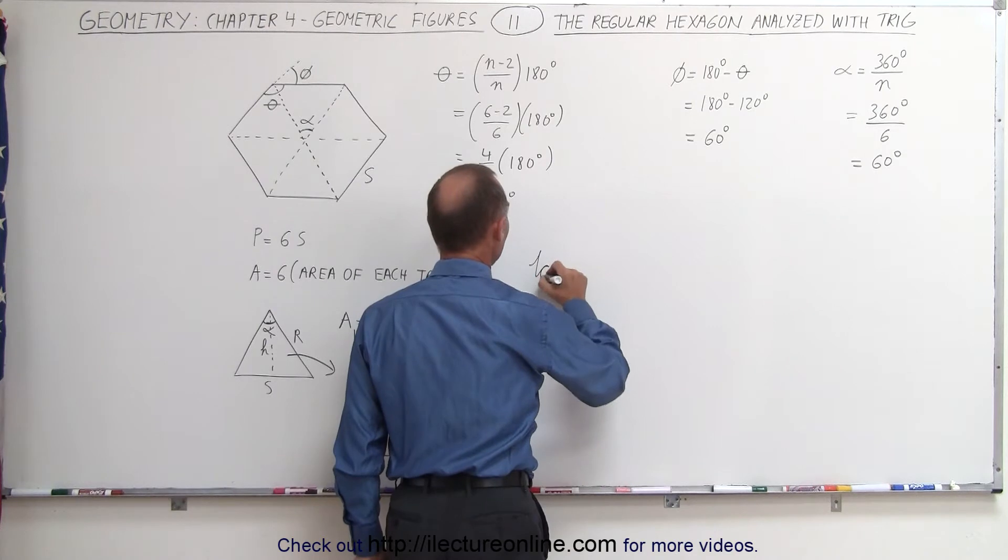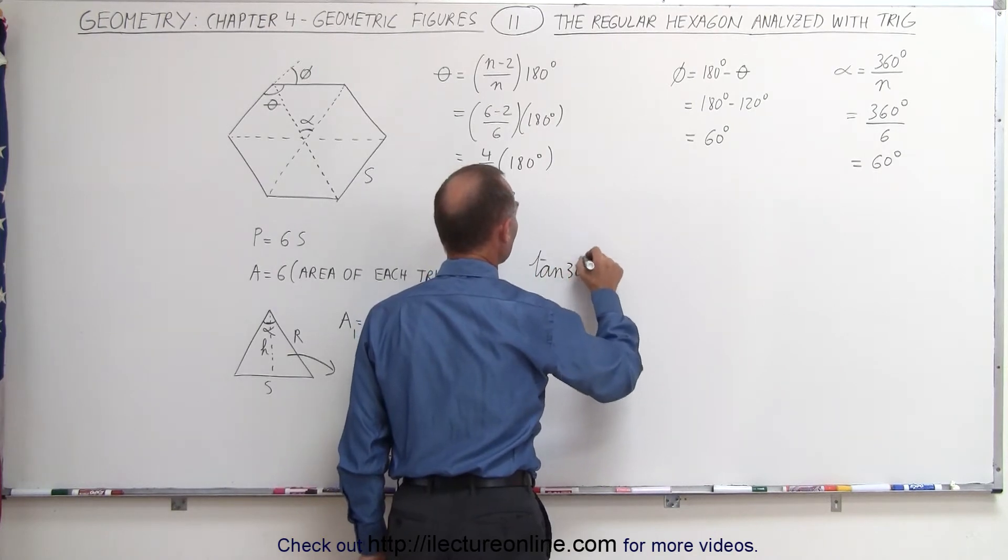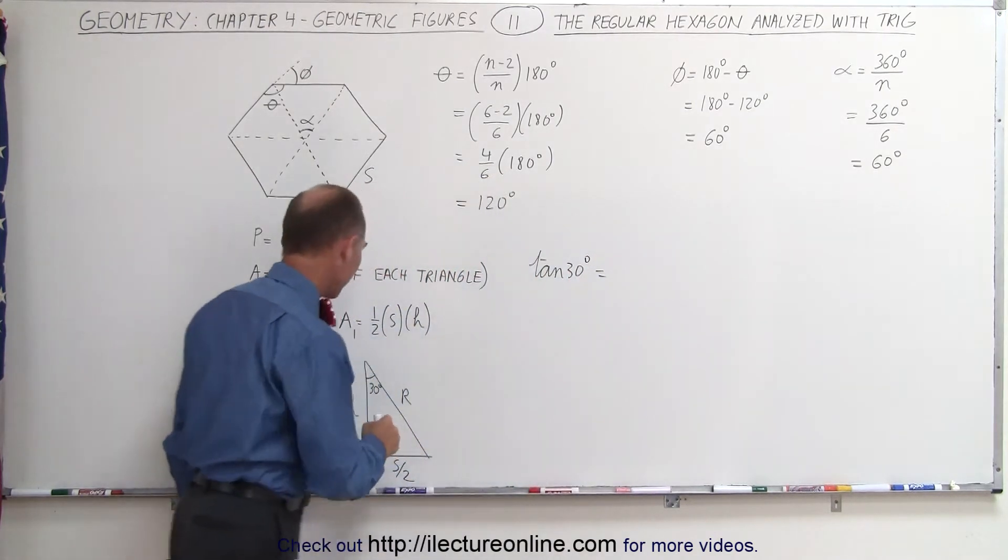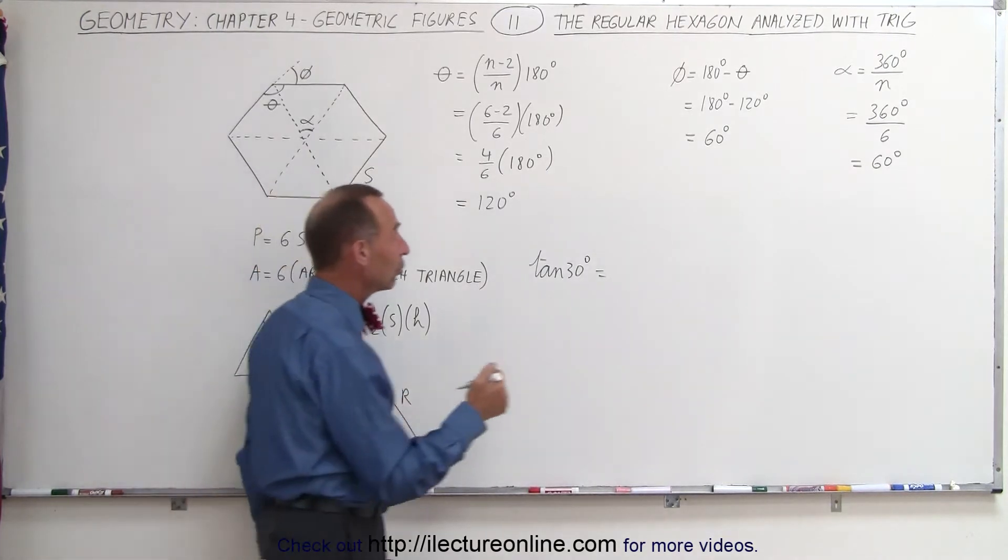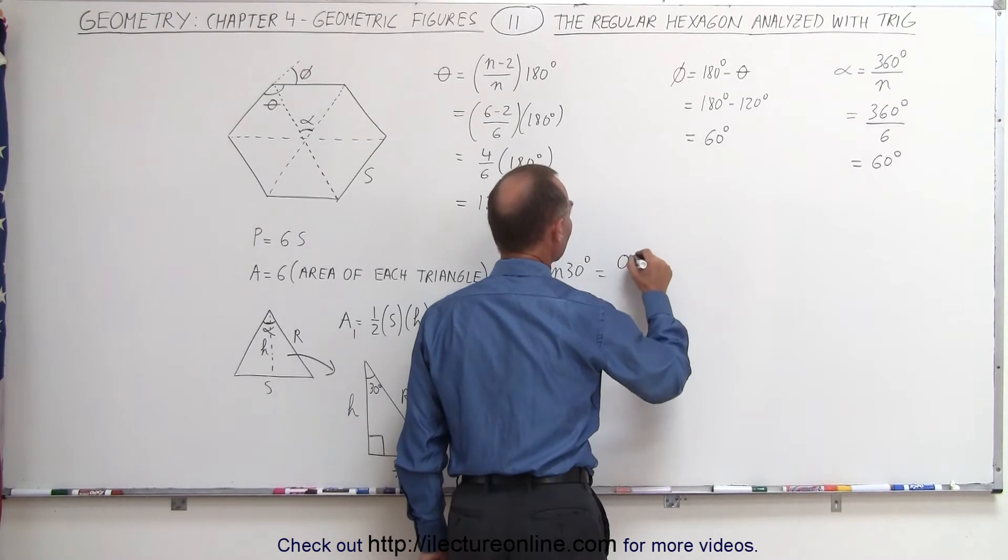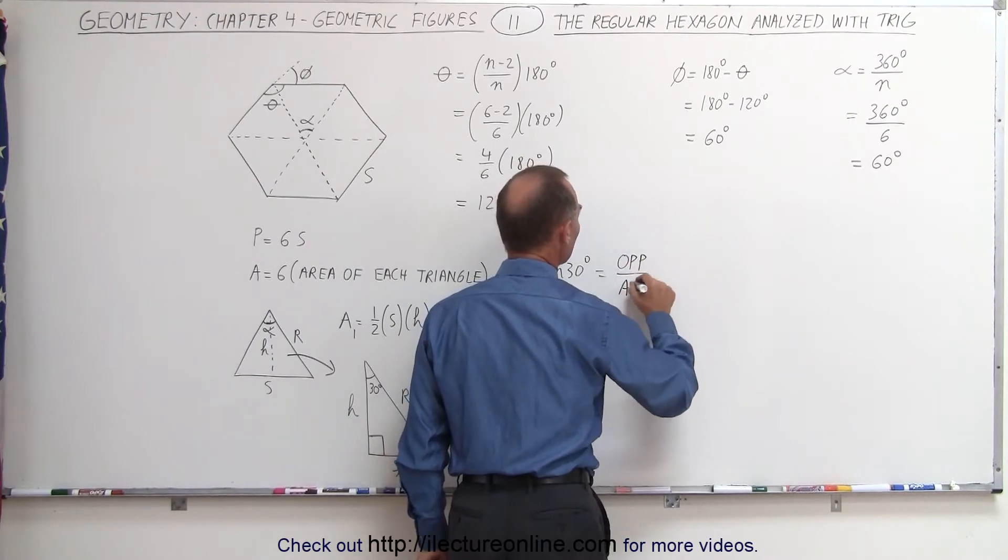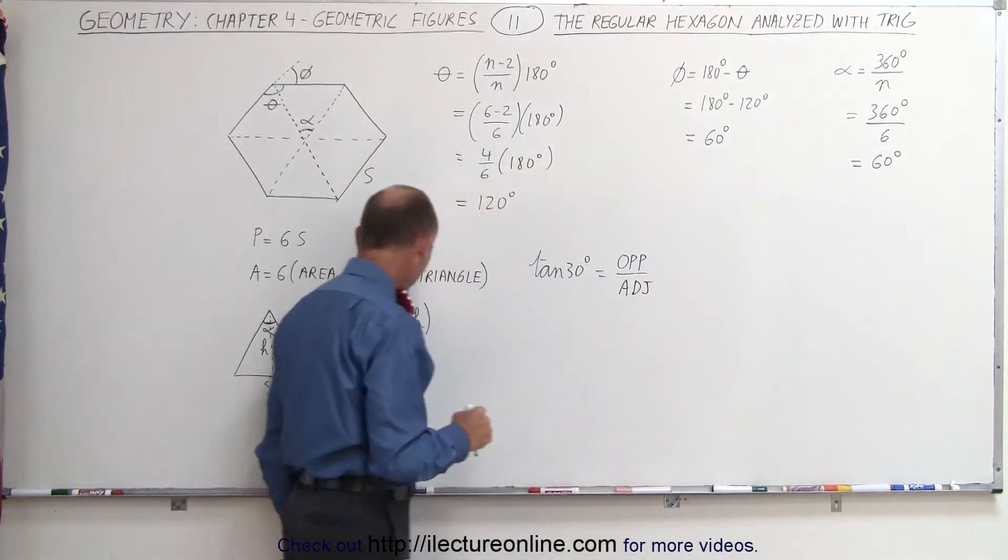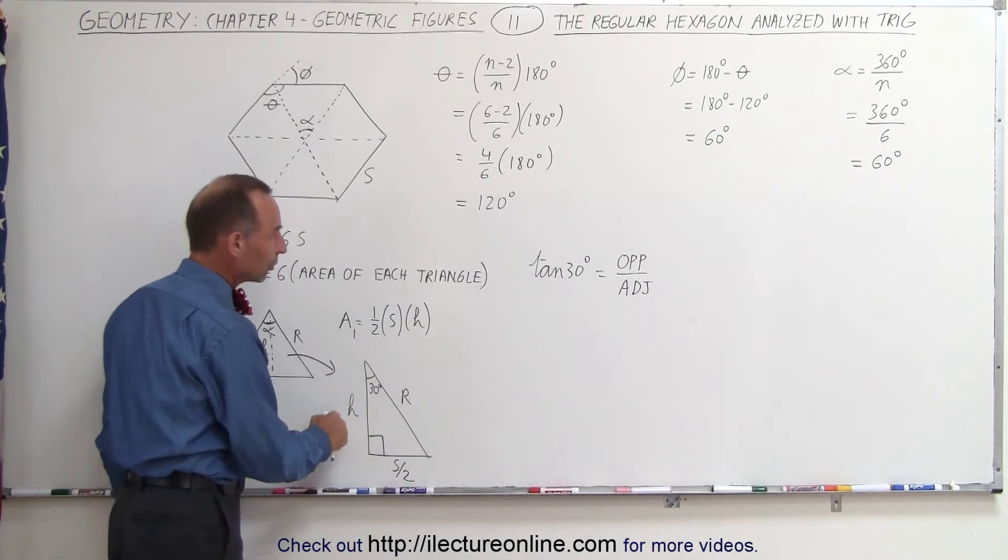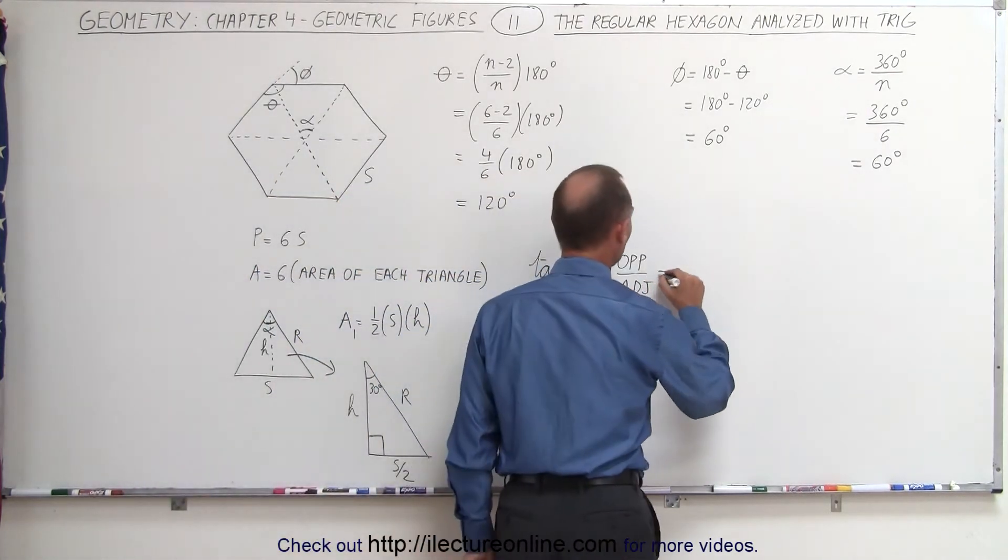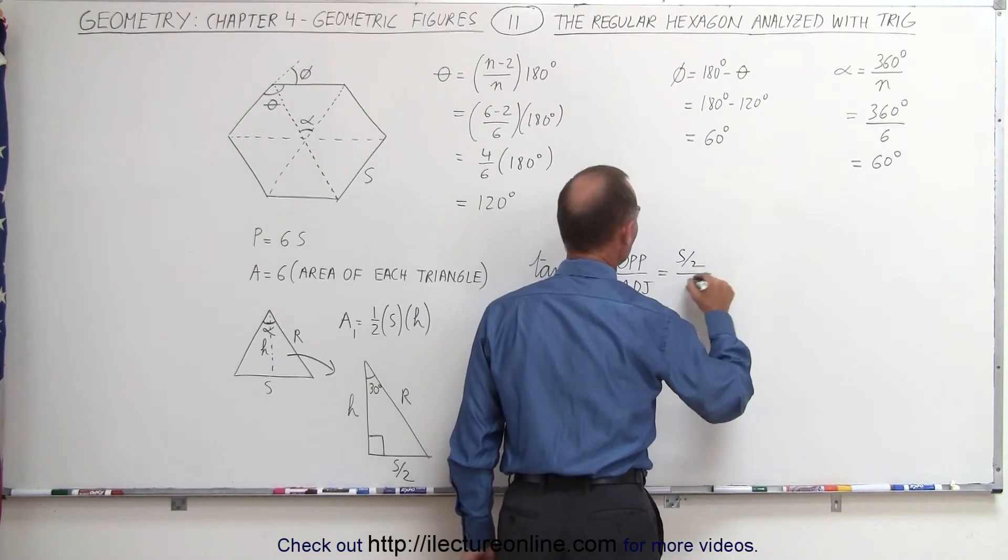We can define the tangent of 30 degrees. By definition, that equals the ratio of the opposite side divided by the adjacent side. The opposite side to the angle is S over 2, and the adjacent side is H. So tan(30°) = (S/2)/H.